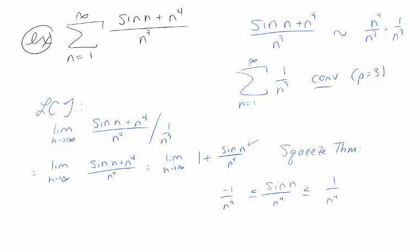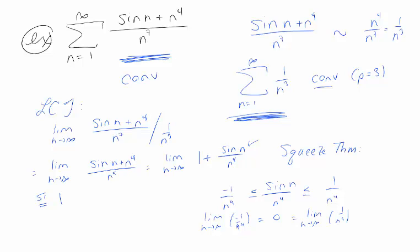The limit of both bounds is 0, so by the squeeze theorem this limit equals 1. The limit comparison test then says: 1 is a positive, finite number, so the black series and the blue series do the same thing. Since the 1/n^3 series converges, this series also converges. That's one way we could do this — using the limit comparison test.